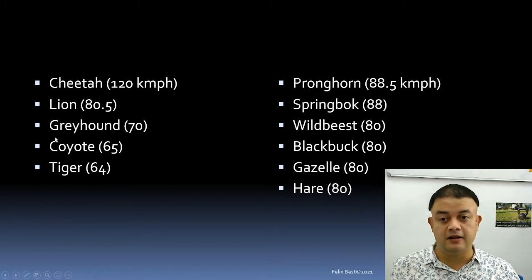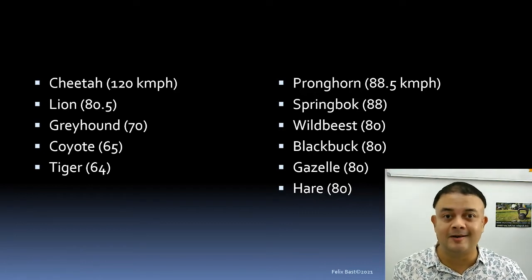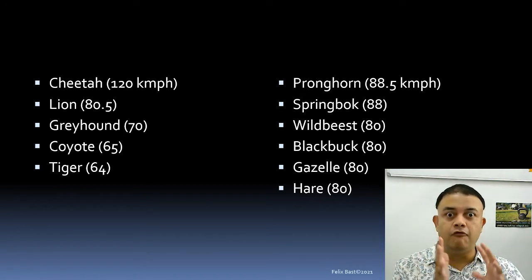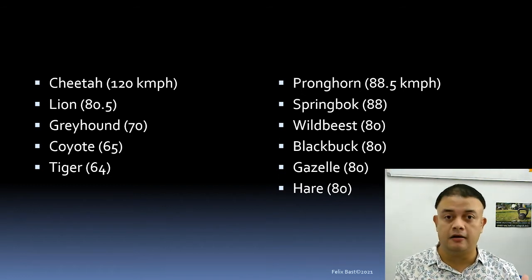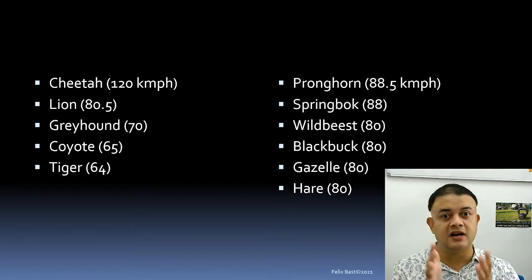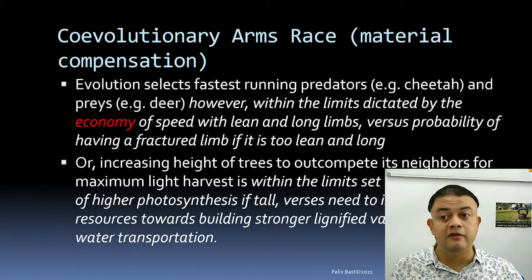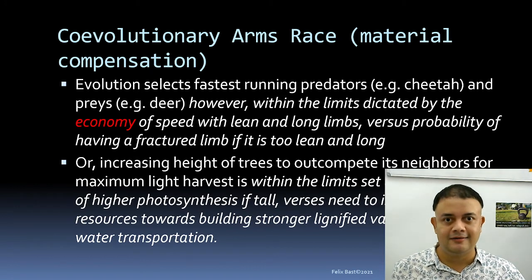There are limits to this arms race dictated by the laws of economy. Interestingly, lions can run faster than tigers because lions are smaller. Natural selection favors speed in both predator and prey, but there is a limit. This is the co-evolutionary arms race, also known as mutual compensation — give and take.